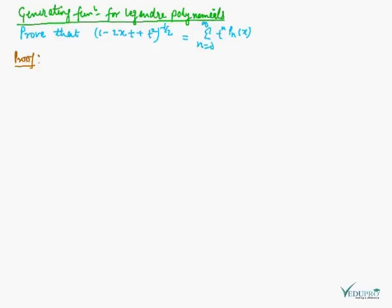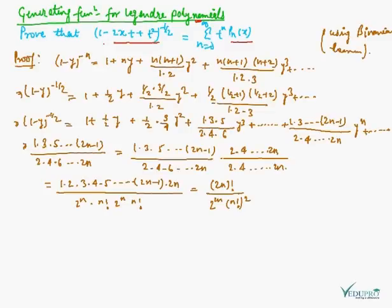We are going to explain the generating function for Legendre polynomials. We have to prove that (1 minus 2xt plus t squared) to the power minus half is equal to summation n from 0 to infinity of t to the power n times P_n(x).